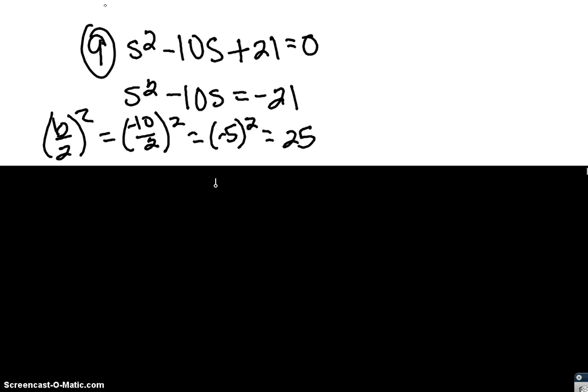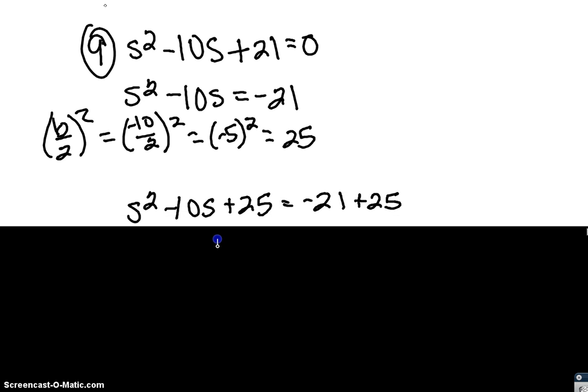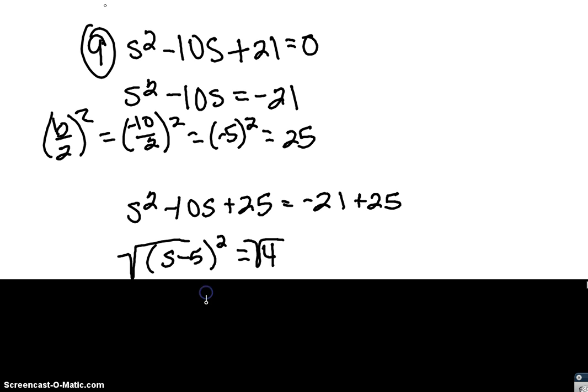Add 25 to both sides. On the left, s squared minus 10s plus 25 rewrites as s minus 5 squared. On the right, negative 21 plus 25 equals 4. So s minus 5 squared equals 4.